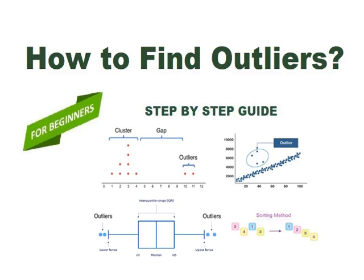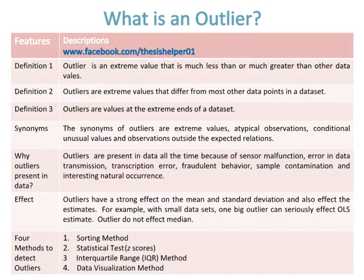How to find outliers: a step-by-step guide. Definition one: an outlier is an extreme value that is much less than or much greater than other data values. Definition two: outliers are extreme values that differ from most other data points in a data set. Definition three: outliers are values at the extreme ends of a data set. Synonyms of outliers include extreme values, atypical observations, unusual values, and observations outside the expected relations.